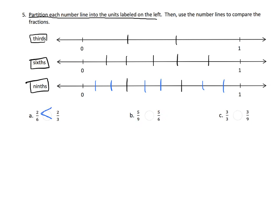5 ninths versus 5 sixths. Here's our ninths number line: 1 ninth, 2 ninths, 3 ninths, 4 ninths, 5 ninths — right here. And then 5 sixths: 1 sixth, 2 sixths, 3 sixths, 4 sixths, 5 sixths — right there. We can see that 5 sixths is much bigger than 5 ninths. So 5 ninths is less than 5 sixths.